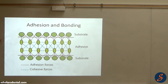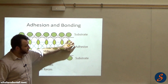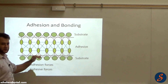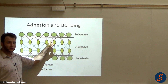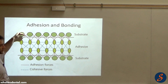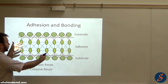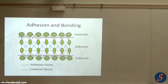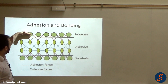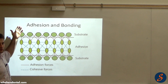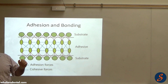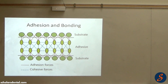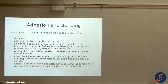For example, if we have a green surface and another green surface with an adhesive in the middle bonding them together, the forces within the yellow adhesive are cohesive, and the forces between the yellow and the green are adhesive. We need good cohesion within the adhesive to achieve good adhesion overall. This applies to a bracket and a tooth, or two glass slabs with water in between.